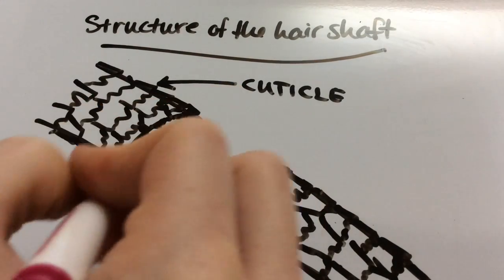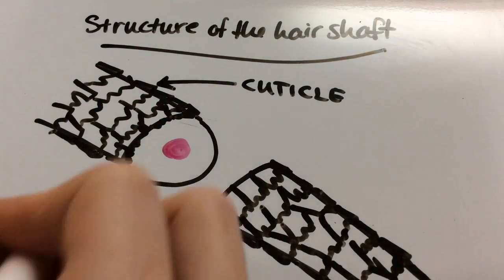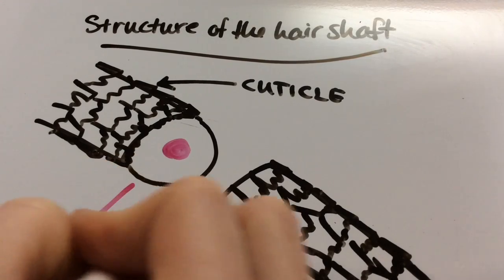In unhealthy hair, the cuticle layer is blown open - like a hurricane ripping through shingles on a house roof.